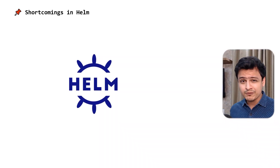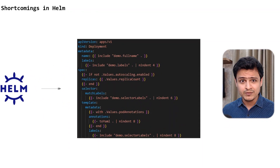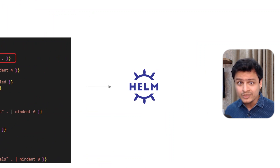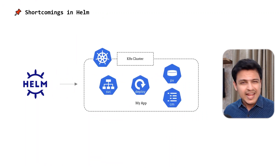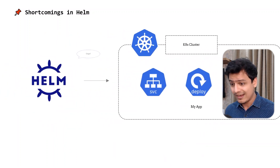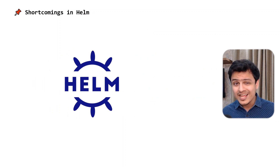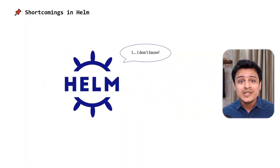Where should I even begin? I could start with the fact that Helm's templating engine isn't really typed, so the tiniest of typos causes the entire thing to break. Or maybe I can talk about the lack of drift correction — anyone with the right access can accidentally change or, worse, delete stuff. How do you fix that? And don't even get me started on Helm hooks. Just why? Why do you even exist?